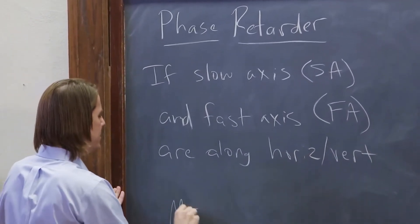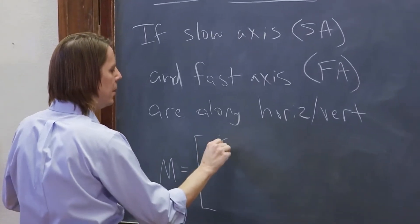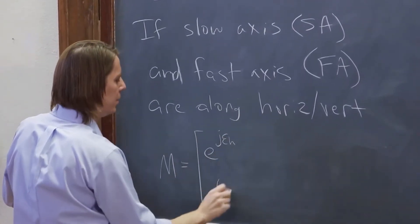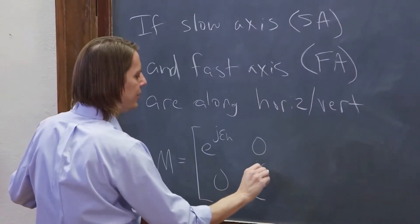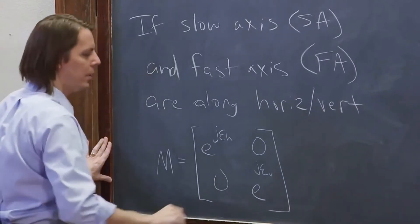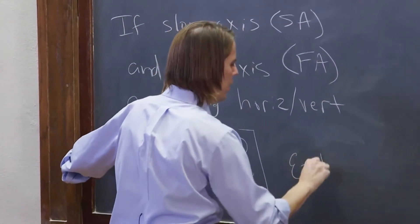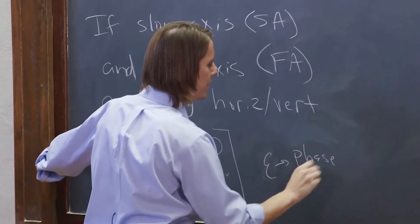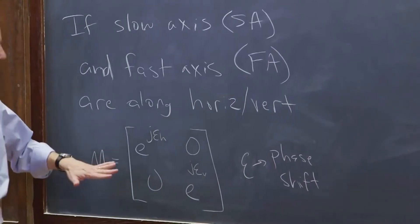then you would write the Jones matrix like this: E to the J epsilon horizontal, 0, 0, E to the J epsilon vertical, where the epsilon is the phase shift each individual one gets, just like we described on the last board. The horizontal and vertical phase shift.